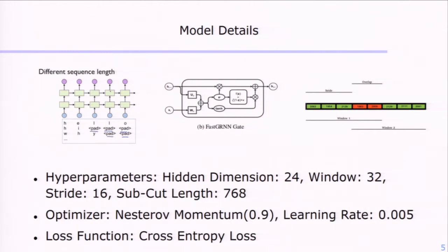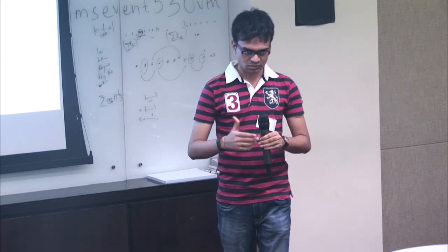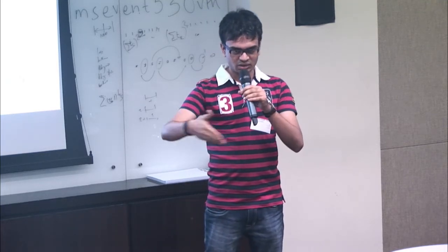When classifying on the test dataset, for getting the accuracy on a test cut, you do something like a majority prediction across all windows created for that test cut. When we tried this approach, the problem was that for test cuts of relatively shorter length — two seconds or even lower — the accuracy was relatively poor. We were only able to reach an accuracy of roughly 94.8% on cuts greater than a certain length.